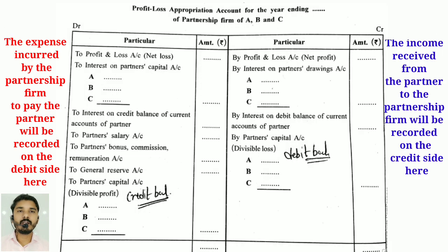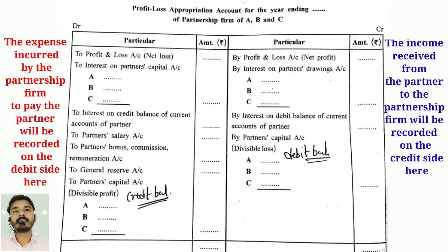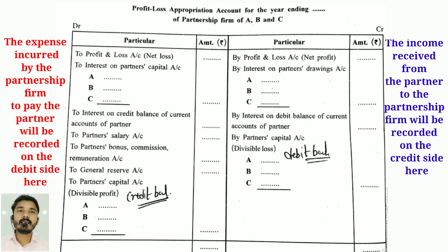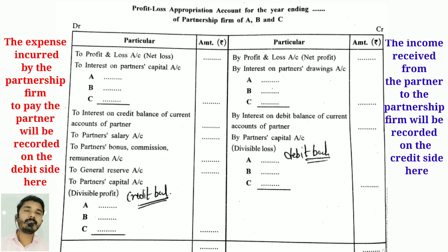So students, the Profit and Loss Appropriation Account specimen and entries I have explained are part of the final account, which is important. In this video, I have explained the fluctuating capital account method, the fixed capital account method using capital and current accounts, and today the Profit and Loss Appropriation Account.